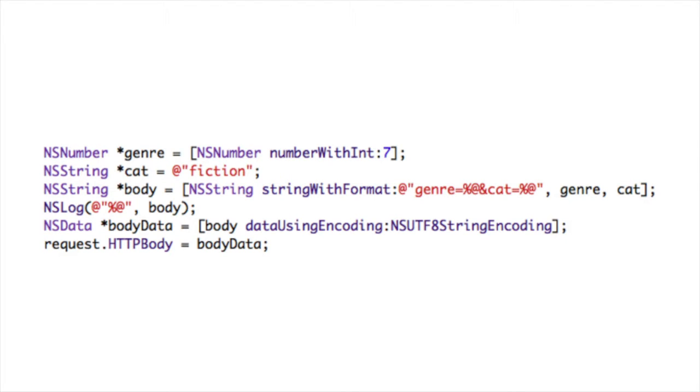The final part is passing data into the request body. The request body contains a URL-encoded string of key-value pairs — for example, an integer value for genre of 7 and the string 'computer signs' for category, separated by an ampersand. Spaces in values are replaced with a plus sign. Here's an example: we create an NSNumber object and a category value, use NSString stringWithFormat to build the URL-encoded string, convert it to an NSData object using UTF-8 string encoding, and pass it as the HTTPBody property of the request.